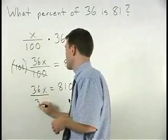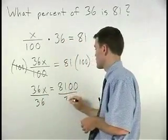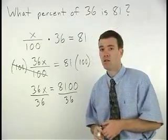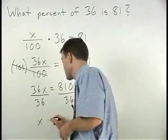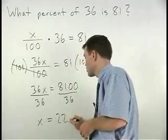Dividing both sides by 36, you can use a calculator to find that x equals 225.